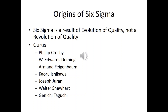Six Sigma is actually just a part of the evolution of quality — it's not a revolution. The concepts and tools have been around for quite a while. Philip Crosby — quality is free. Deming, who taught the Japanese. Juran, who also helped with the Japanese. Shewhart, who came up with statistical process control. And Taguchi, who came up with design of experiments and orthogonal arrays. It's all been there — Six Sigma just puts it together.